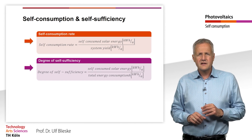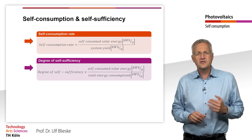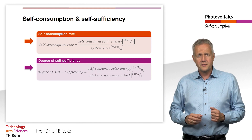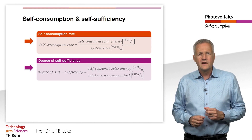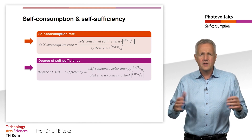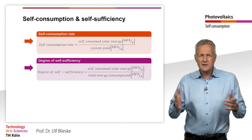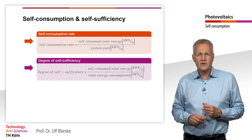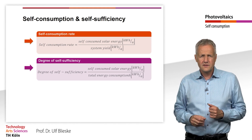It is economically interesting to achieve the highest possible self-consumption rate, especially when there is little or no payment for solar energy feed-in. But what does the level of self-consumption depend on and how can it be influenced?